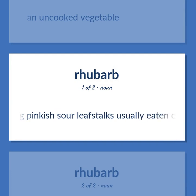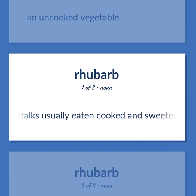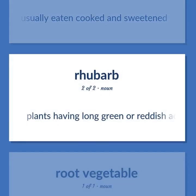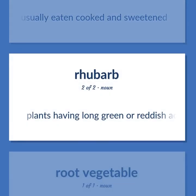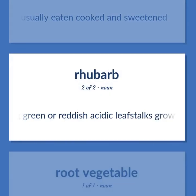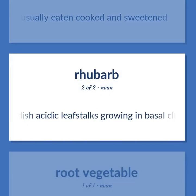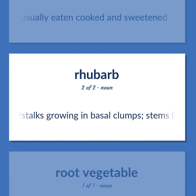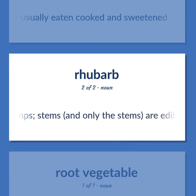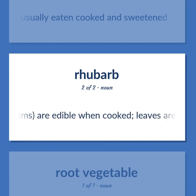Rhubarb: Long pinkish sour leaf stalks, usually eaten cooked and sweetened. Plants having long green or reddish acidic leaf stalks growing in basal clumps. Stems, and only the stems, are edible when cooked — leaves are poisonous.